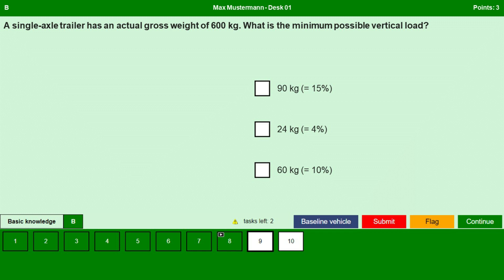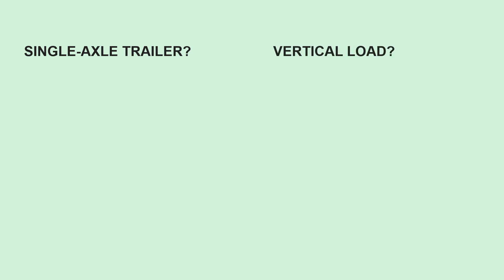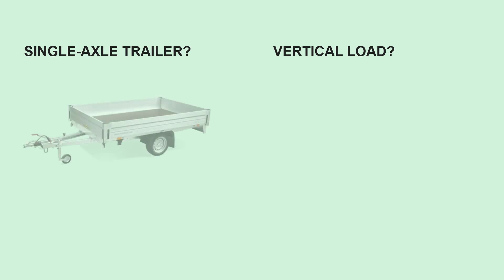Before getting into the options, we have to understand two things from this question: what is a single axle trailer, and what is a vertical load? A single axle trailer looks like this — it has only one set of wheels.